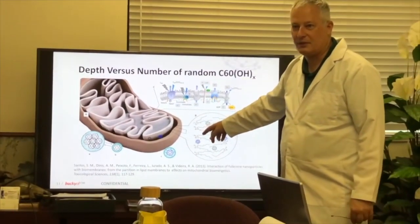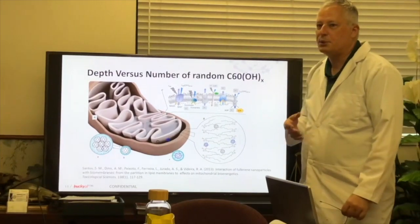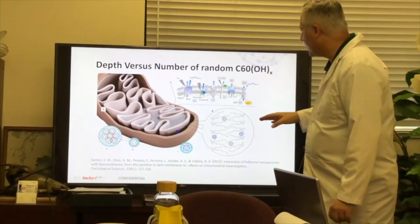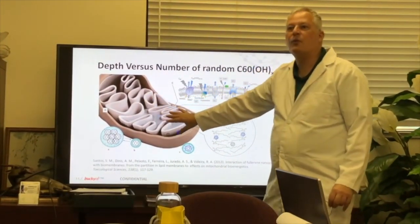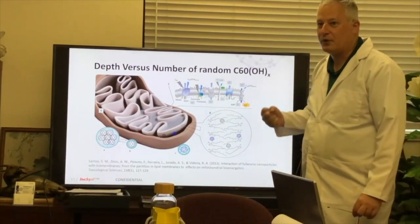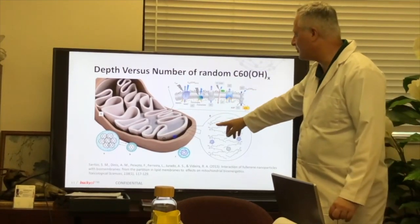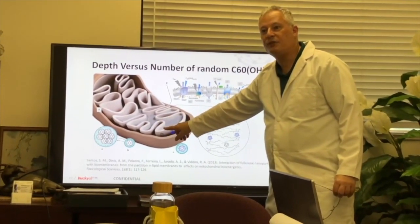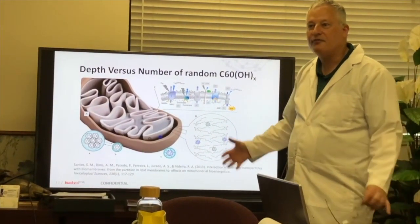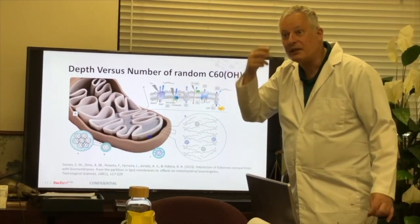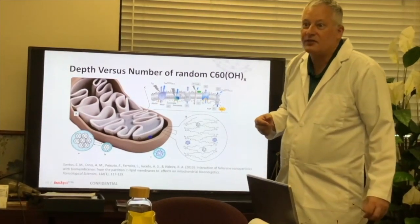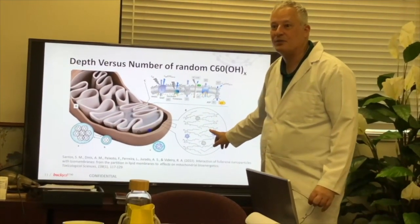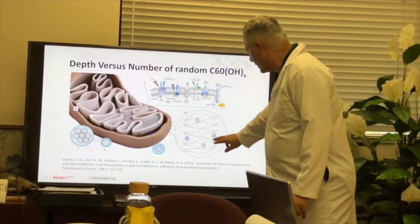Mitochondria are inside your cells along with other structures like the Golgi apparatus and nucleus. These are like the battery of the cell — this is where all your energy is produced, including the contraction ability in your muscles. If you can make mitochondria more efficient, if you can extract energy from glucose more efficiently, you're going to have more energy and think more clearly because your neurons, which consume a large amount of glucose, will be better fueled. This is one of the best nootropic supplements you can ever get.